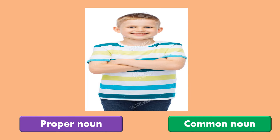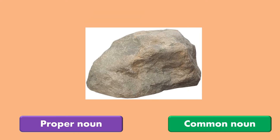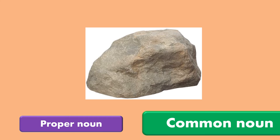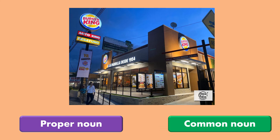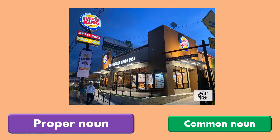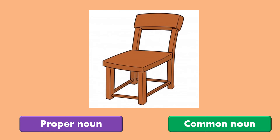In this activity, we are going to choose if the picture has a proper noun or a common noun. Here we have a boy — the boy is a common noun, but if we give him a special name, he's going to have a proper noun. This is a rock — rock is a common noun. A pencil is a common noun. This restaurant is a common noun, but it has a special name: Burger King, so it's going to have a proper noun. A chair doesn't have a name, so it's a common noun.